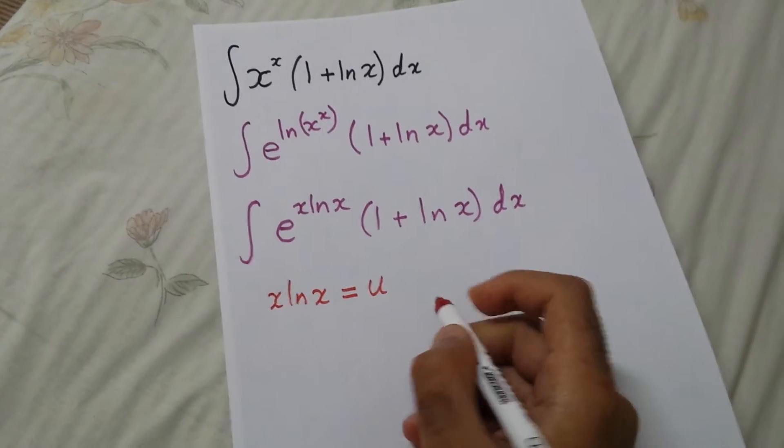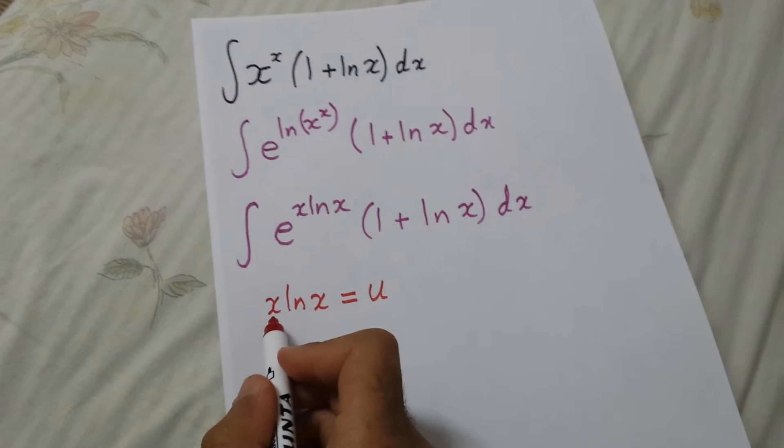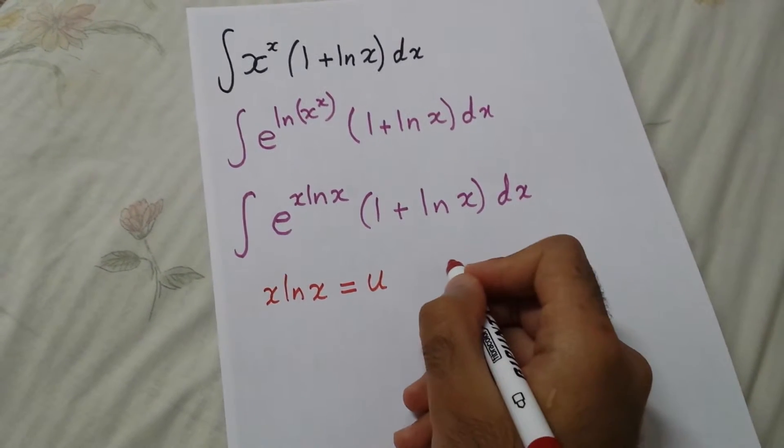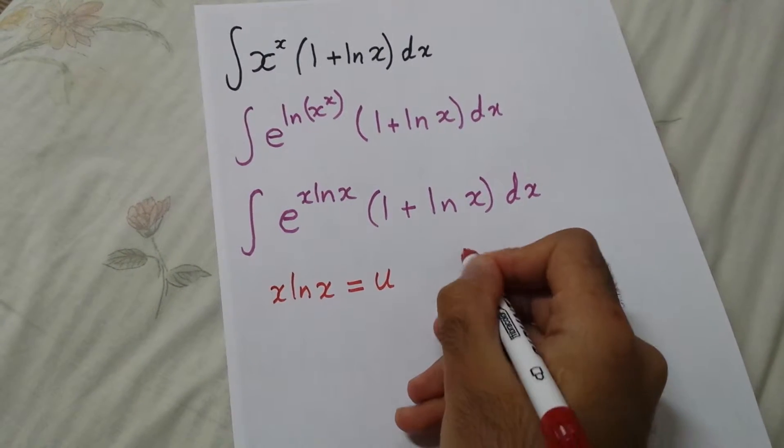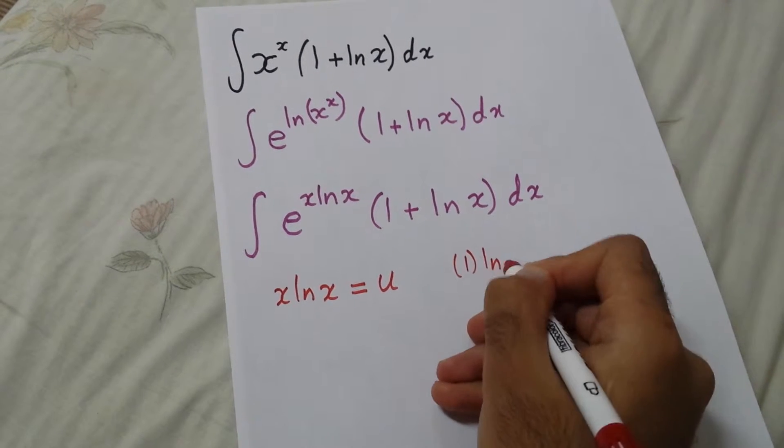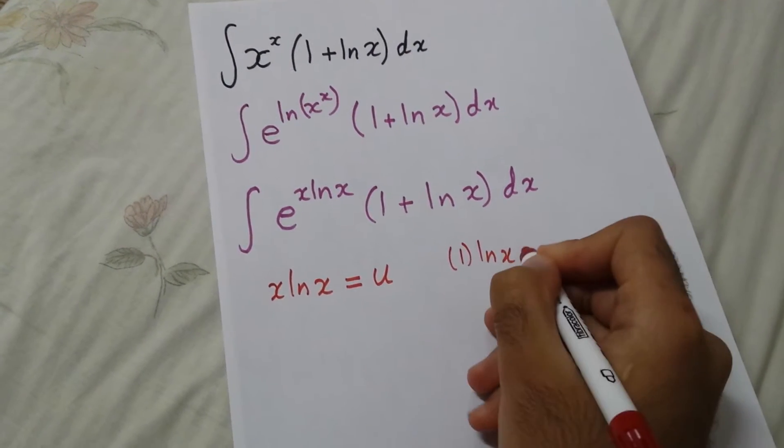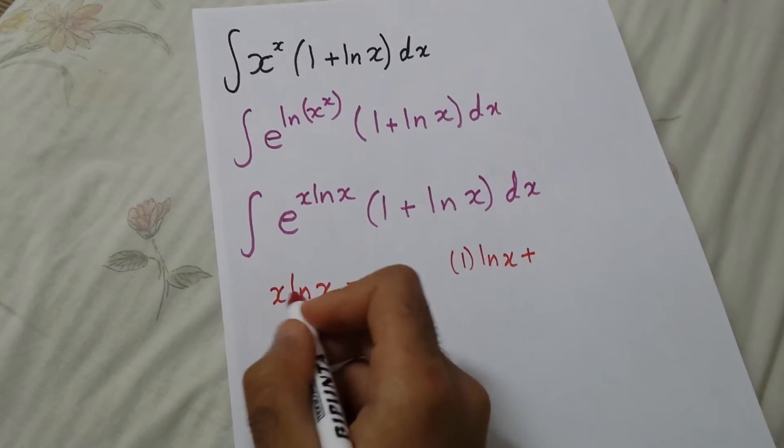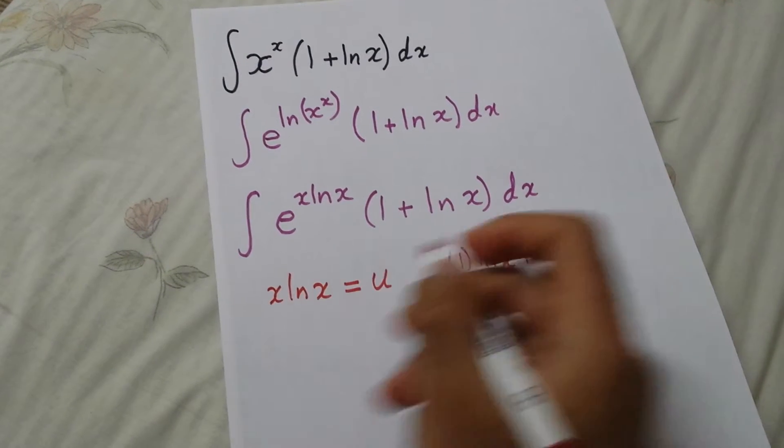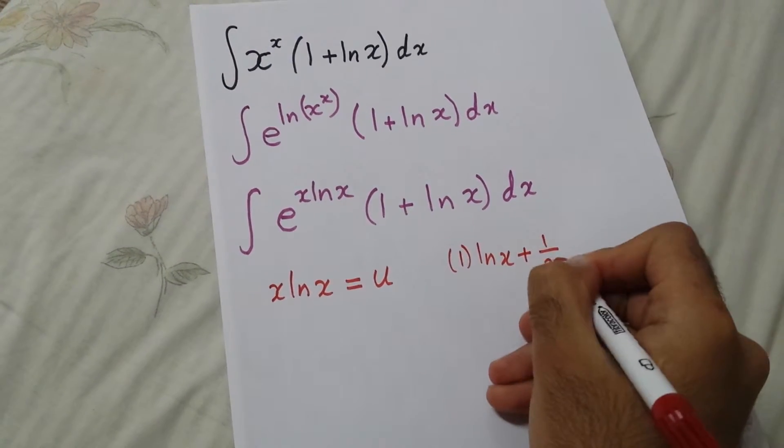Now derive both sides. Derivative of x is 1 times ln x, plus derivative of ln x, which is 1 over x, times x, all times dx equals du.